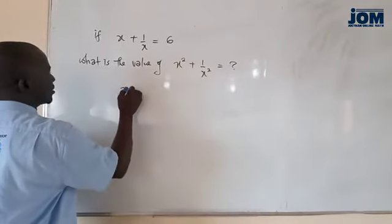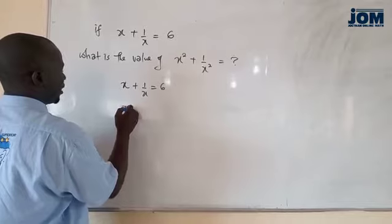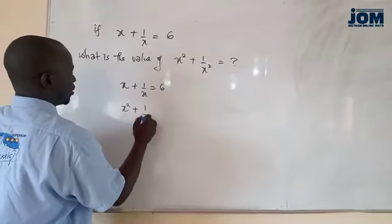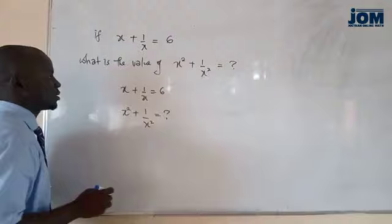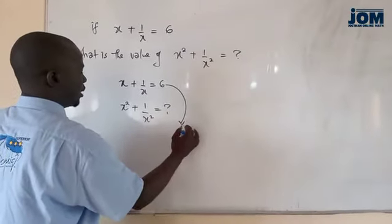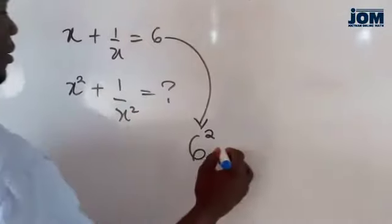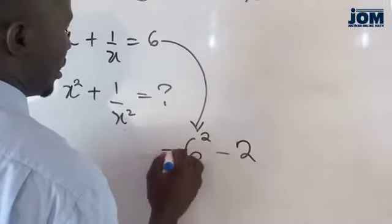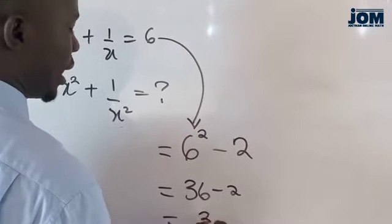If you have x plus 1 over x equal to 6, and you need to find the value of x squared plus 1 over x squared, what you need to do is take this 6 and square it. Subtract it by the power of x here. And this answer will be 36 minus 2, which is equal to 34.